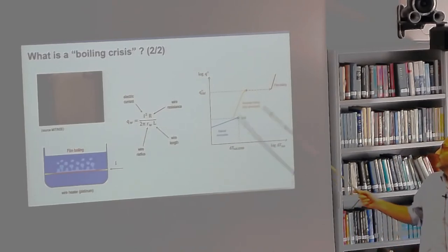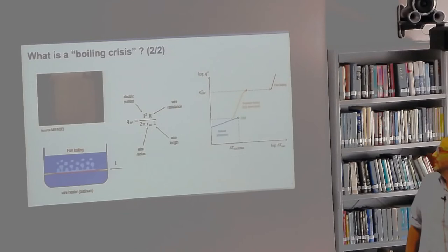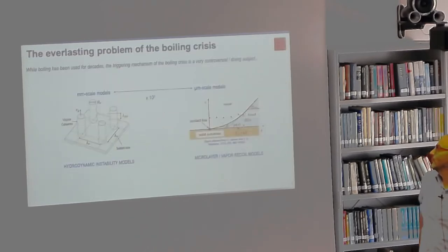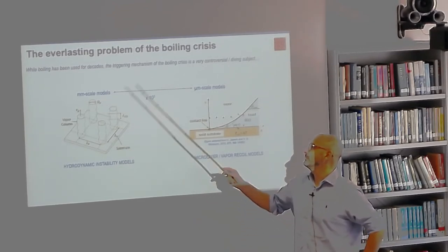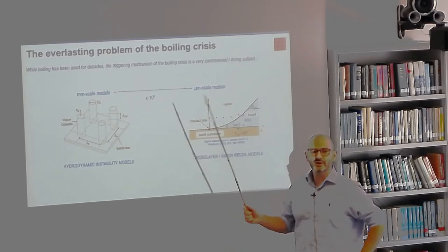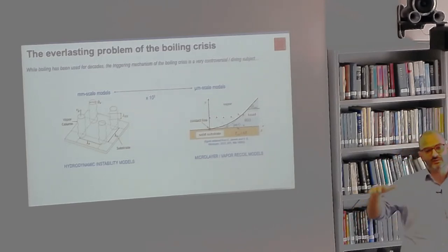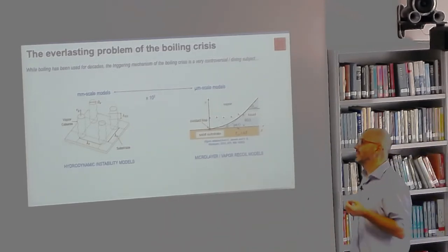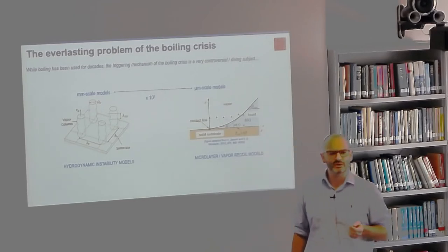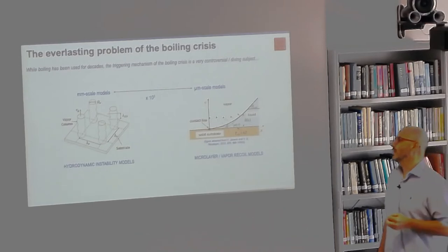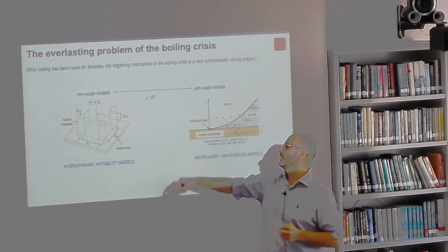While we have used boiling in countless applications, the problem is that we still don't fundamentally know by which kind of instability the boiling crisis is triggered. In textbooks, the most likely explanation is the hydrodynamic instability model: at high heat flux, vapor columns flowing away from the surface interact via Kelvin-Helmholtz instability, patching together to isolate the surface. This is a phenomenon with a characteristic length scale on the order of centimeters — about 27 mm in atmospheric water. Many models today still rely on this far-field description.